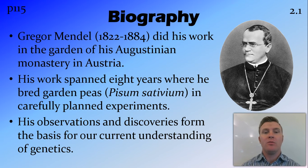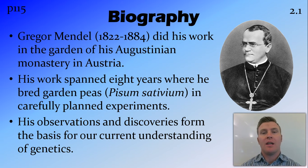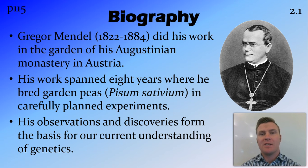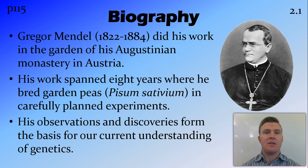Firstly, a little bit about Mendel. He was around in the 19th century and he was an Augustinian monk living in Austria. He did all of his experiments on the peas that were in the garden at the monastery. He spent eight years doing very meticulous experiments and recording all his data, and his observations and discoveries from these experiments form the basis of our current understanding of genetics. There are a lot of things about genetics that weren't known at the time that he laid the foundation for, which we still use today.